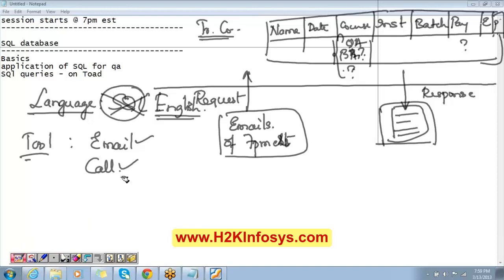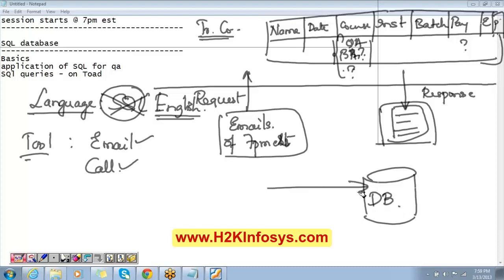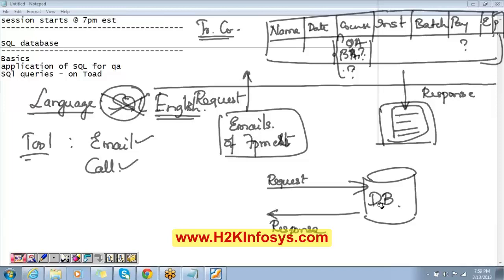In every batch, students say SQL — it's not a new answer. So, we have a database, and to this database we send a request to get specific data because we don't need all the information every time. I send a specific request and expect a specific response. For example, from our training database, I send a request for the emails of the 7 PM batch and get back a list of those emails.